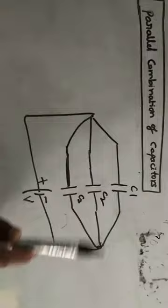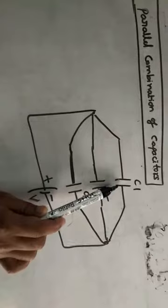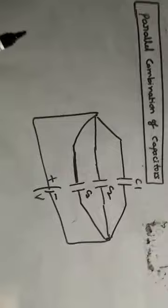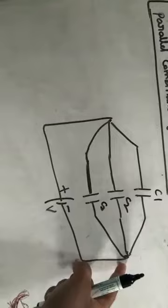What is meant by parallel combination? This is the first plate of capacitor 1, this is also the first plate of capacitor 2, and this is also the first plate of capacitor 3. This is the second plate of capacitor 1, second plate of capacitor 2, second plate of capacitor 3. All the first plates are connected to one terminal, all the second plates are connected to another terminal, and the two terminals are connected to opposite terminals of a battery — this is called parallel combination.